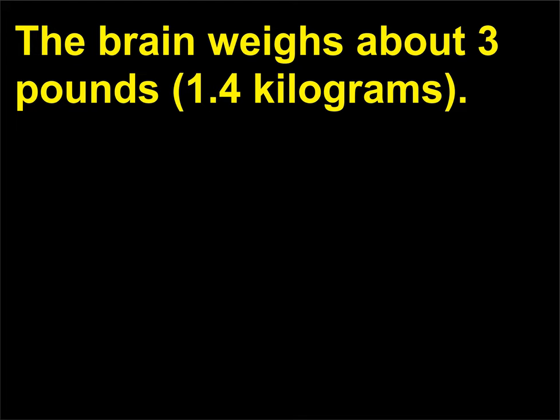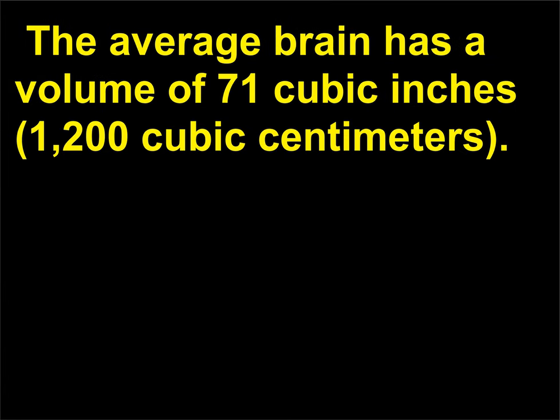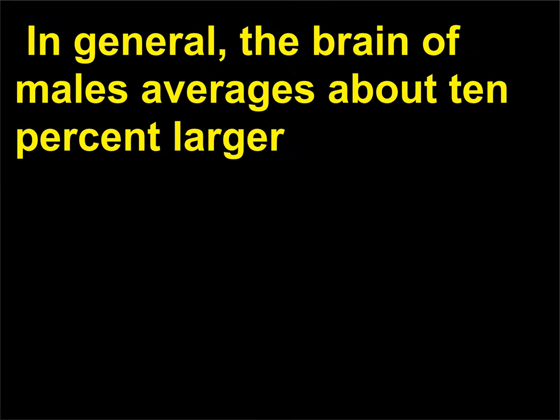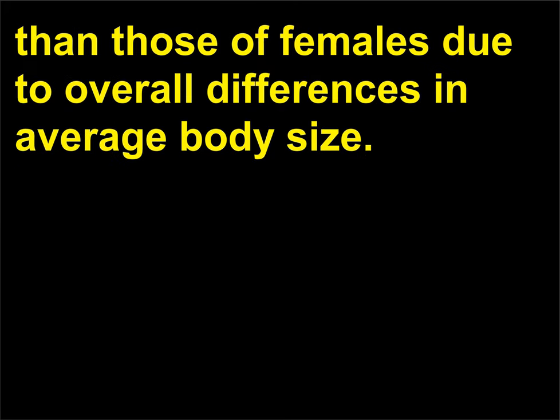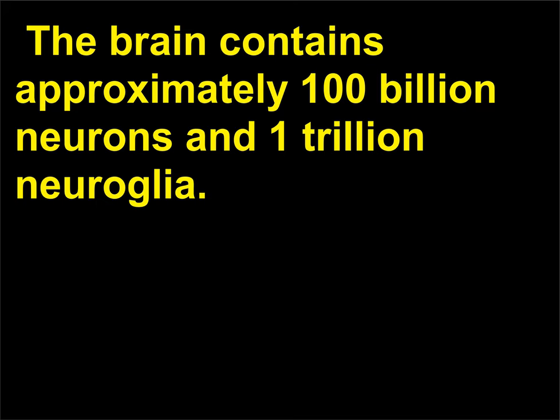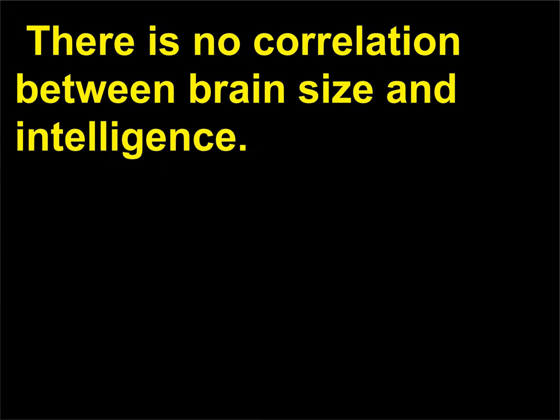How large is the brain? The brain weighs about 3 pounds (1.4 kilograms). The average brain has a volume of 71 cubic inches (1,200 cubic centimeters). In general, the brain of males averages about 10% larger than those of females, due to overall differences in average body size. The brain contains approximately 100 billion neurons and 1 trillion neuroglia. There is no correlation between brain size and intelligence.